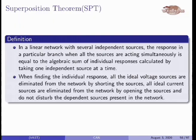Now let us study the superposition theorem. This theorem is applicable in circuits which contain more than two sources. In a linear network with several independent sources, the response in a particular branch when all the sources are acting simultaneously is equal to the algebraic sum of individual responses calculated by taking one independent source at a time. When finding individual responses, all ideal voltage sources are eliminated by shorting and all ideal current sources are eliminated by opening; do not disturb dependent sources present in the network.